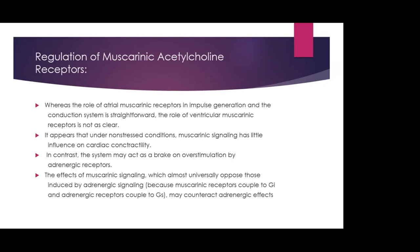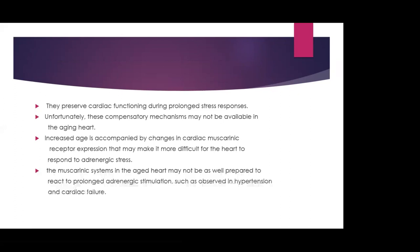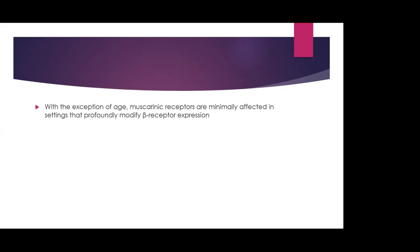Regarding regulation of muscarinic acetylcholine receptors: while the role of atrial muscarinic receptors in impulse generation is straightforward, the role of ventricular muscarinic receptors is less clear. Under non-stress conditions, muscarinic signaling has very little contribution to cardiac contractility. However, the system may act as a brake on overstimulation when there is adrenergic overdrive. The effects of muscarinic signaling, which almost universally oppose those of adrenergic signaling, may counteract adrenergic effects and preserve cardiac function during prolonged stress responses. Unfortunately, this compensatory mechanism may not be available in the aging heart — increased age is accompanied by changes in muscarinic receptor expression that may make it more difficult for the heart to respond to adrenergic stress.